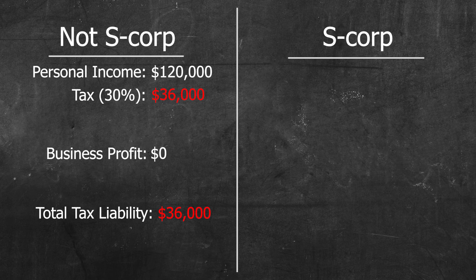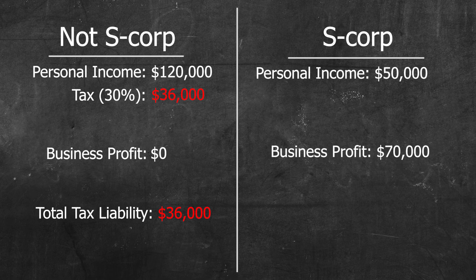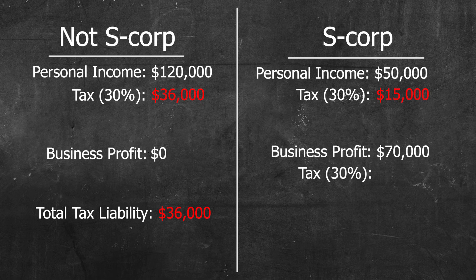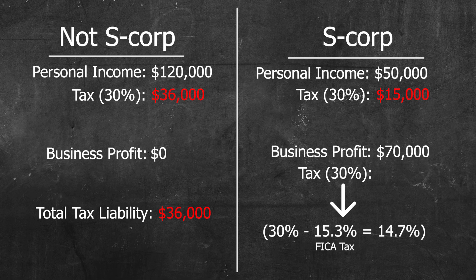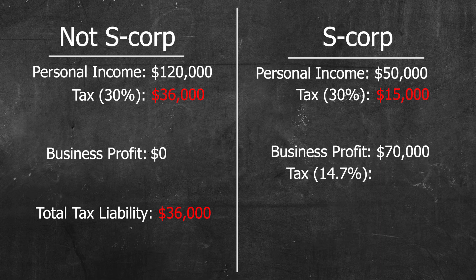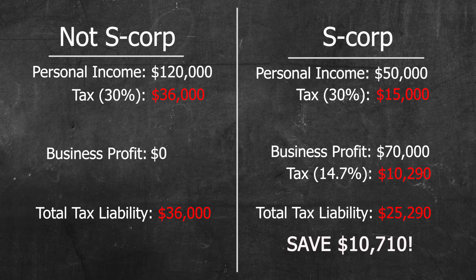Now let's assume your LLC has S Corp status. You still pay yourself $50,000 in salary and your business still earns $70,000. Since your business is now an S Corp, we calculate your personal taxes first: 30% on a $50,000 salary is $15,000. Next, we calculate the taxes on the S Corp profits. Instead of paying the same 30% tax rate, we subtract 15.3%, because S Corp profits are not subject to FICA taxes. So the tax rate becomes 14.7% on the $70,000, which equals $10,290. Add this to your personal taxes of $15,000, bringing our total tax liability to $25,290 — a savings of a little over $10,000 versus paying taxes as an LLC without S Corp status.